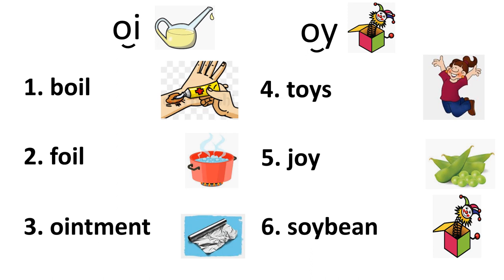Write, code, and read the words. Next, match the words to the picture by using the numbers and letters. For example, picture one matches with letter B, so you will write 1B. Now complete two through six on your own.